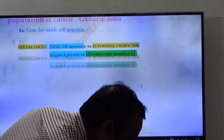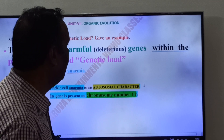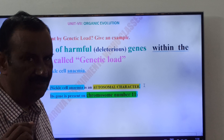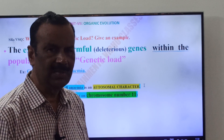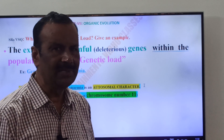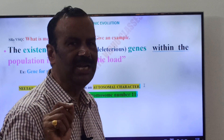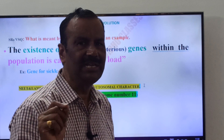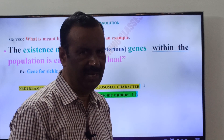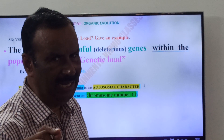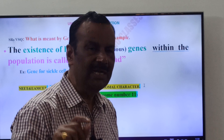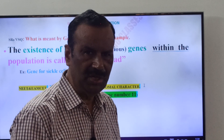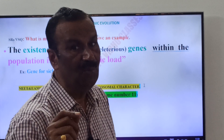This is about genetic load. Once again, very very important: What is meant by genetic load? The existence of deleterious or harmful genes or alleles in the population is called genetic load. Best example: gene for sickle cell anemia, present on chromosome number 11. It is the best example of point mutation, in which a change takes place in the beta chain of hemoglobin — glutamic acid is replaced by valine.